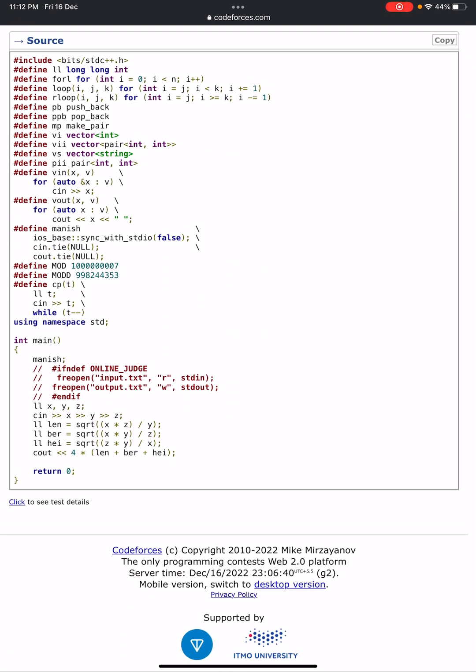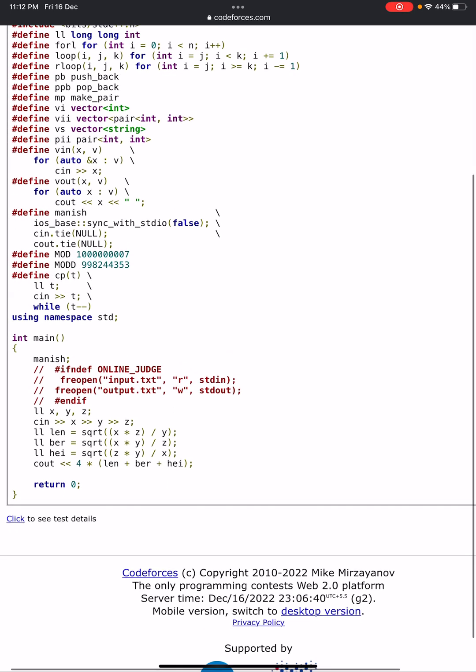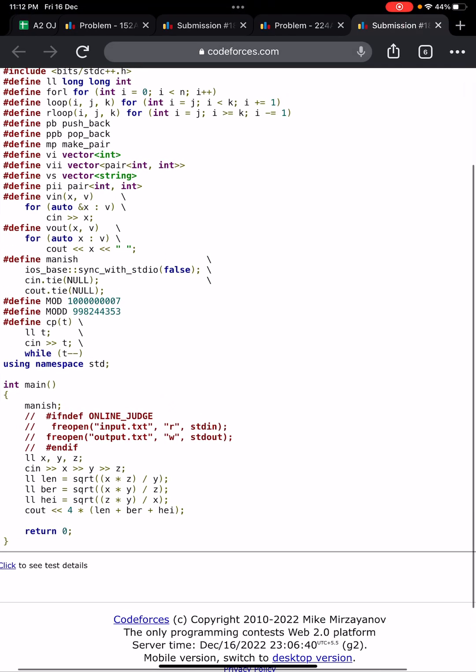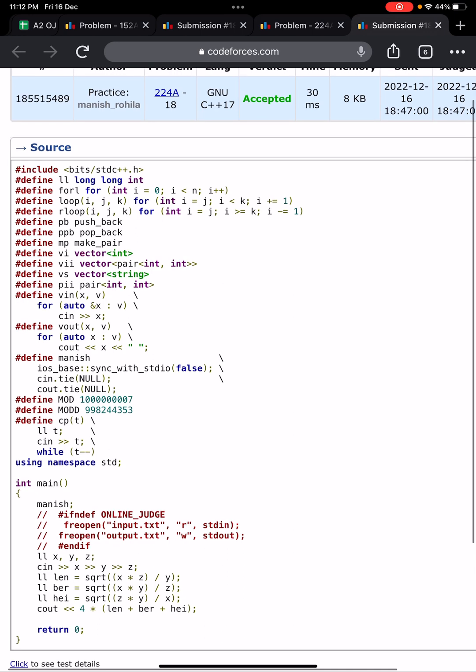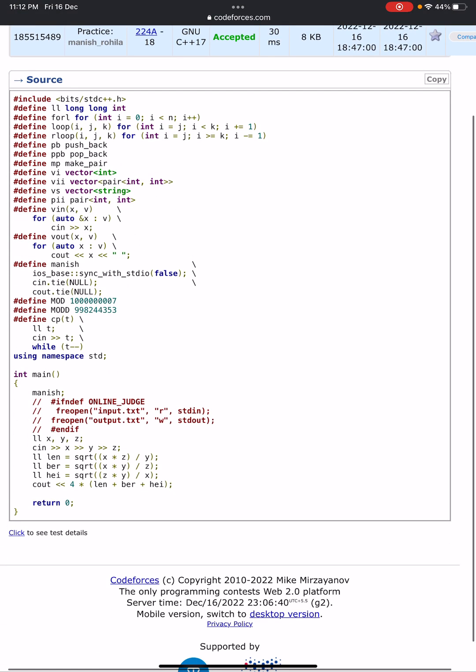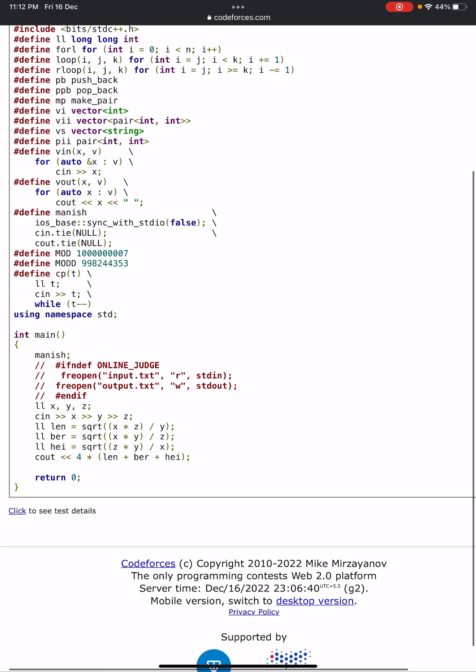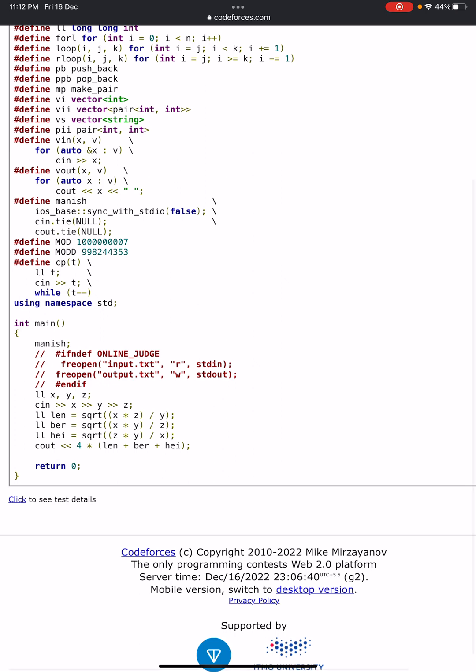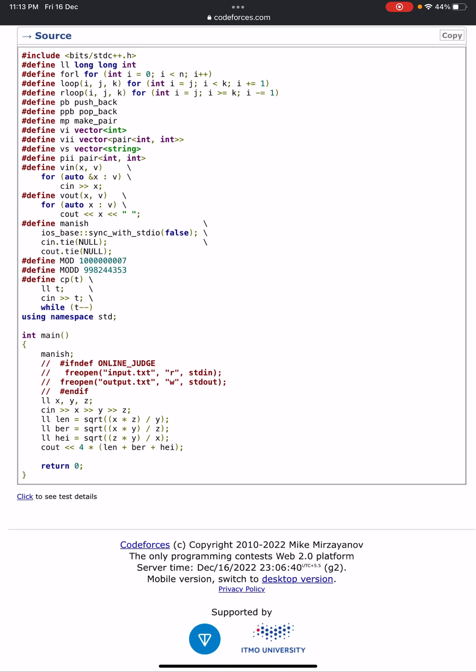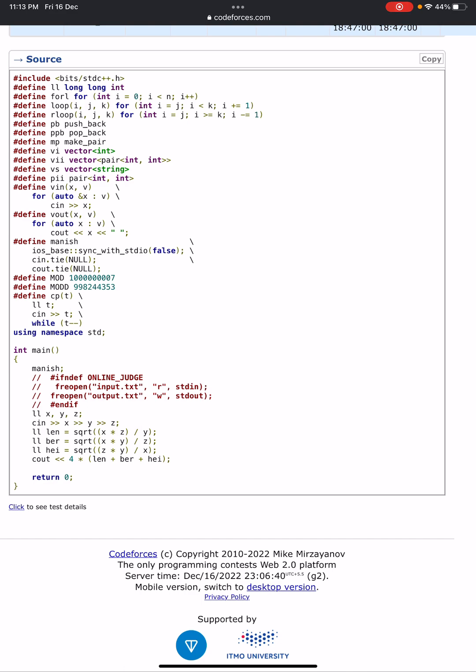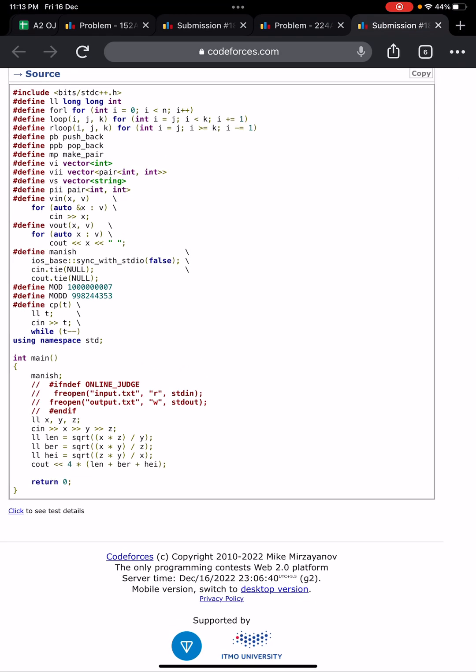Long long LL is a reference to long long - I initially mentioned hashtag define LL long long int, so I am using LL as a shortcut. cin x, y, z, and then simply cout 4 times (length plus breadth plus height). Very simple basic problem of mathematics. Thank you everyone.